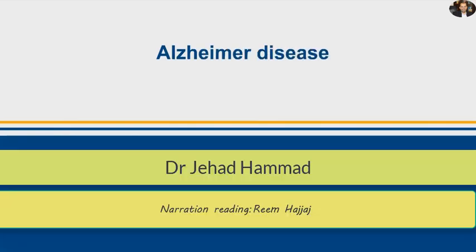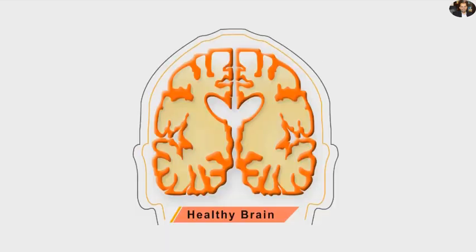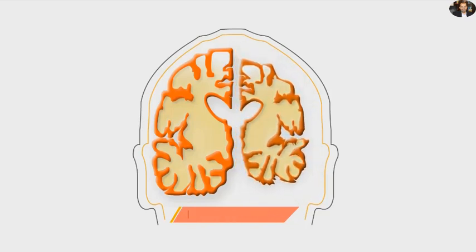Alzheimer disease. Here is a cross-section of a normal brain. In the case of advanced Alzheimer disease, there is a generalized shrinkage of the brain tissue.